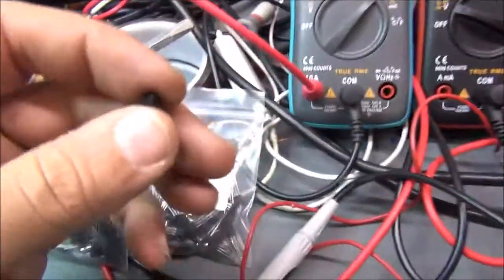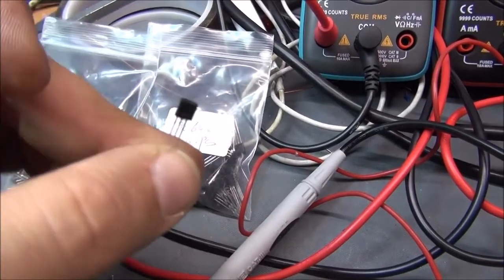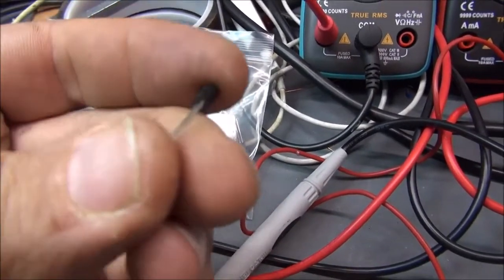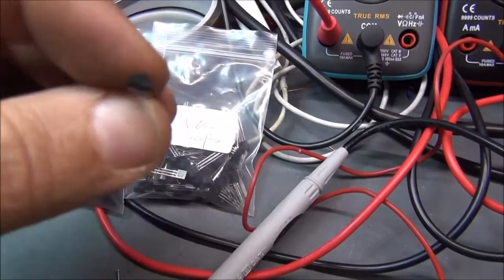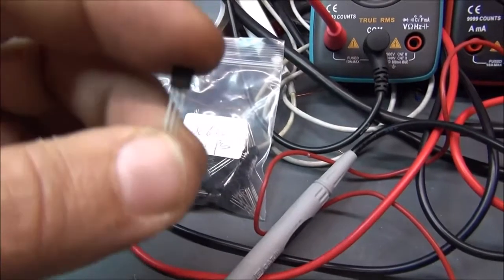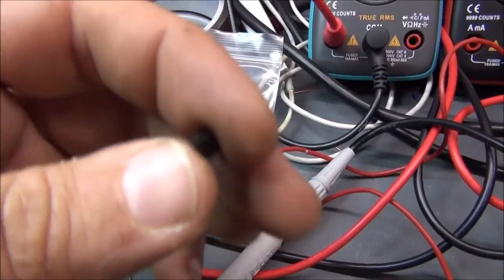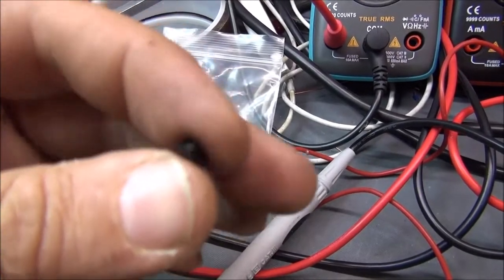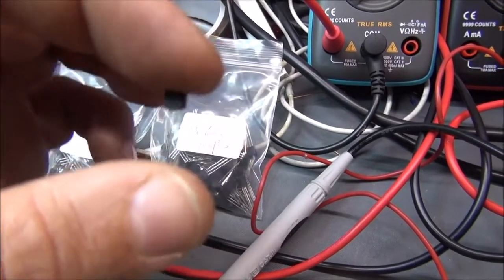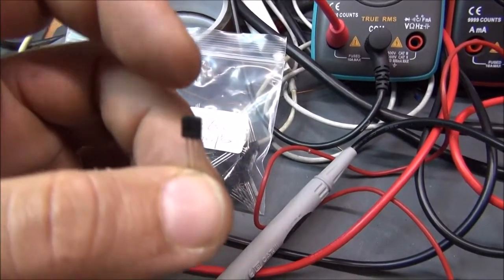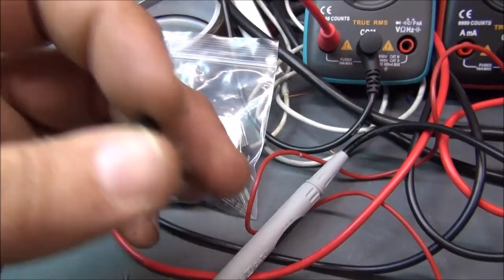This kind of transistor is used for class AB amplifiers and they are able to hold one watt of power. They are very small but very powerful. They are able to work with 80 volts and with one amp.